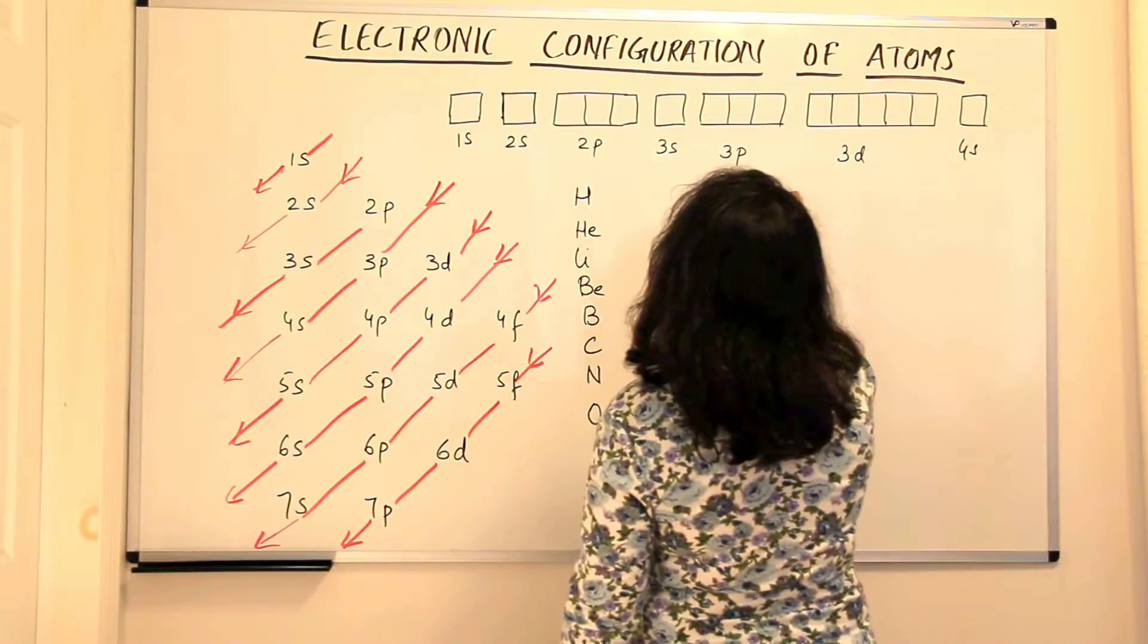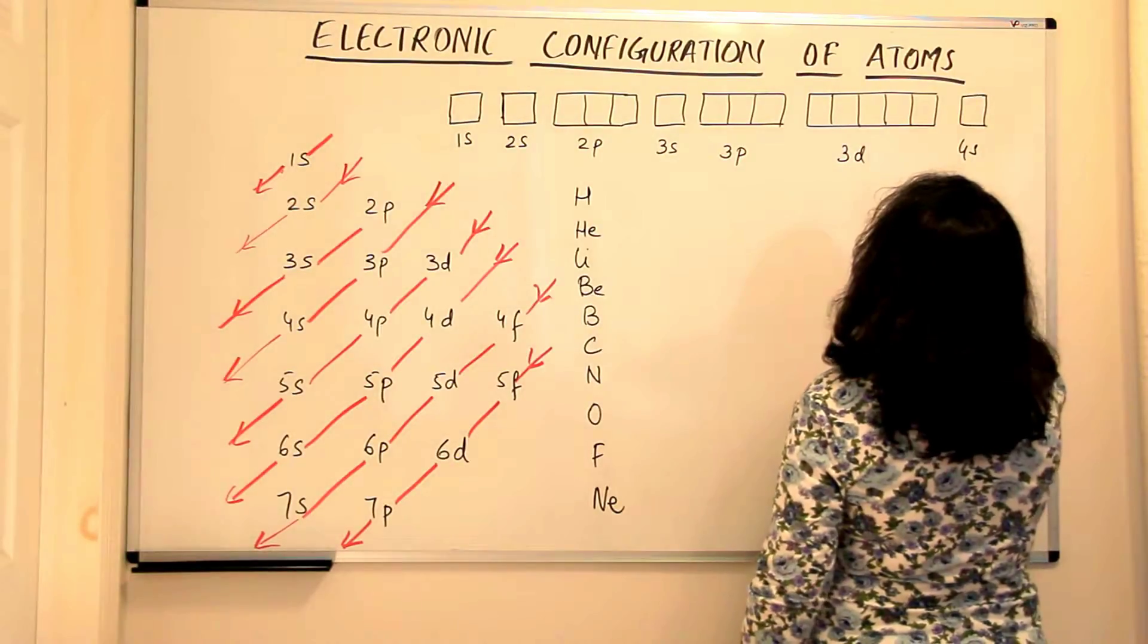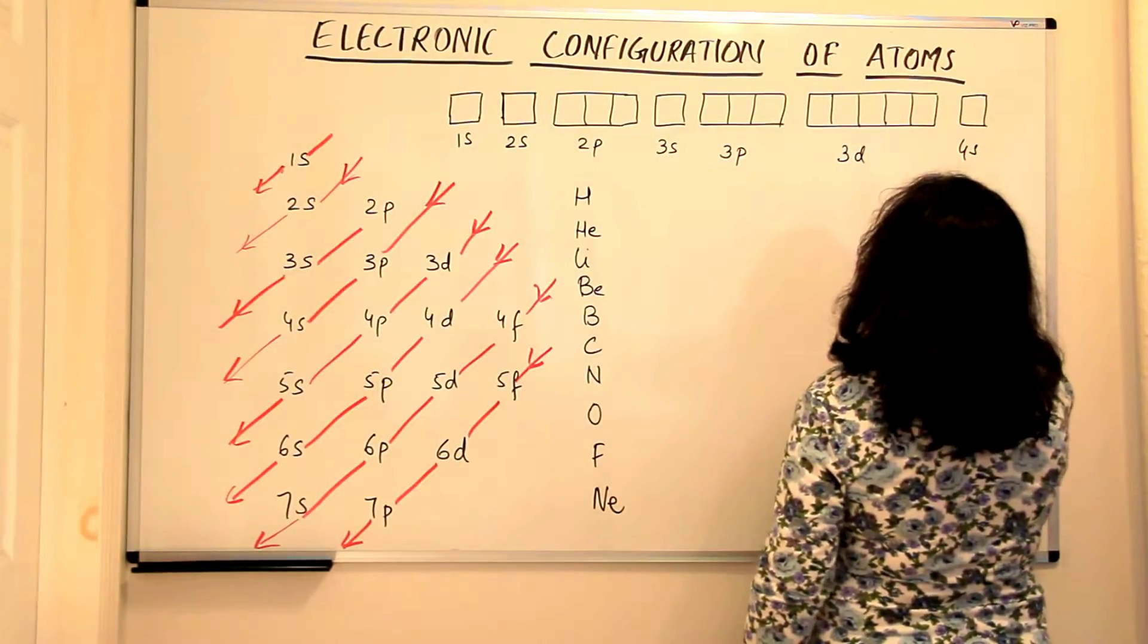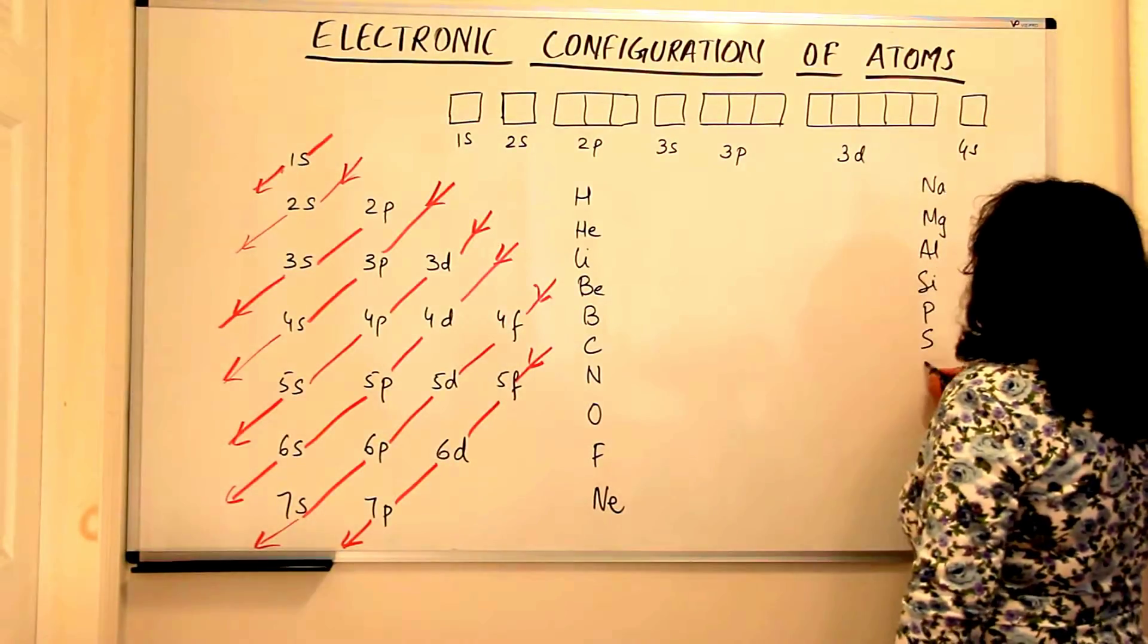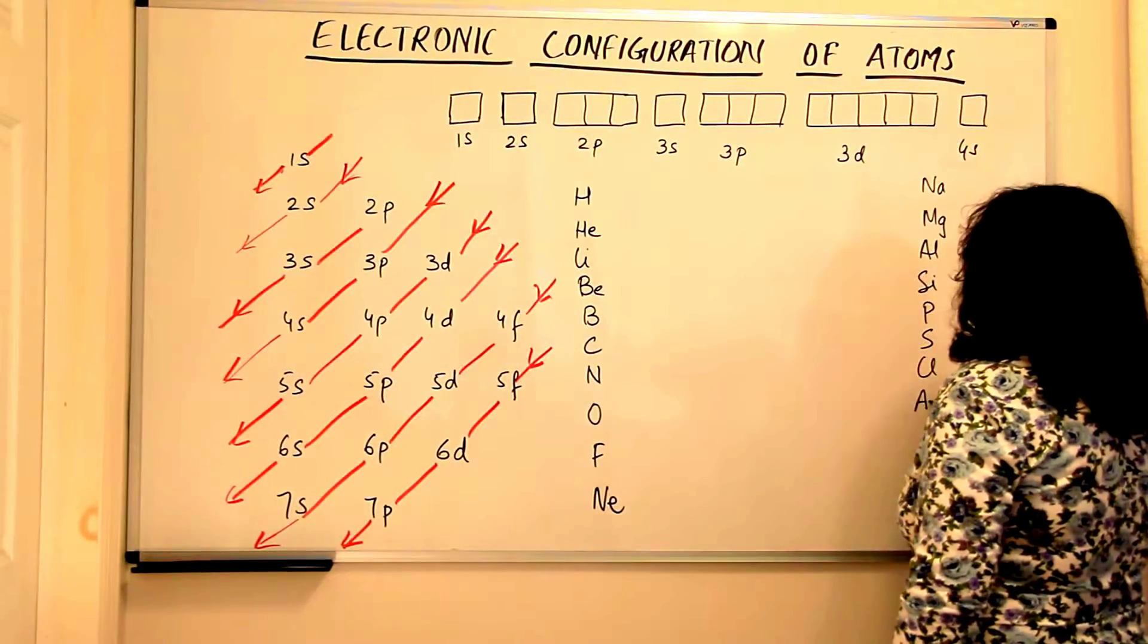The next is sodium, magnesium, aluminum, silicon, phosphorus, sulfur, chlorine, argon, potassium and calcium.